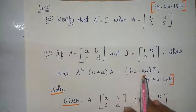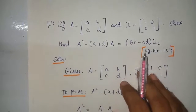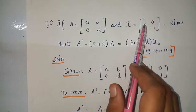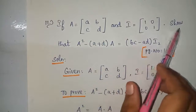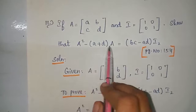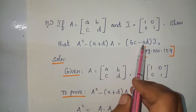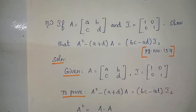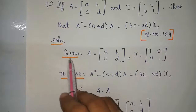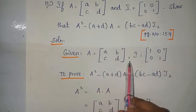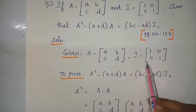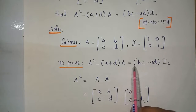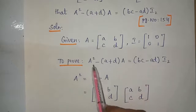Next, problem number 11: if A equals a b c d and I equals 1 0 0 1, then show that A squared minus (a plus d) times A equals (bc minus ad) times I₂. This problem belongs to page number 154. Solution: given A equals a b c d, I equals 1 0 0 1. To prove A squared minus (a plus d)A equals (bc minus ad)I₂.